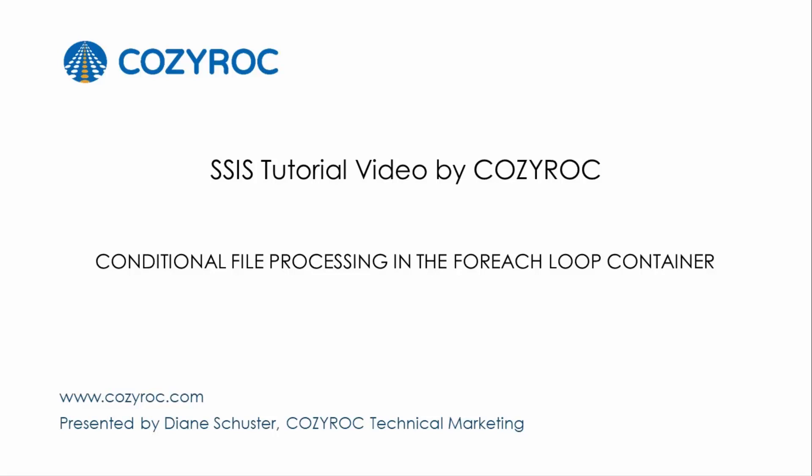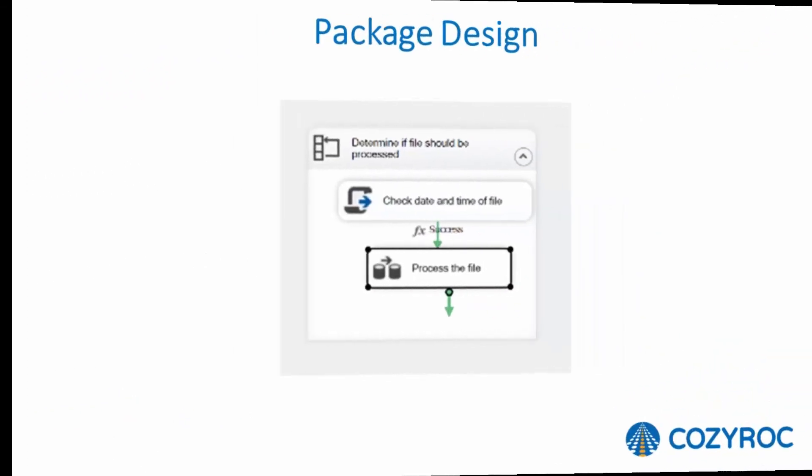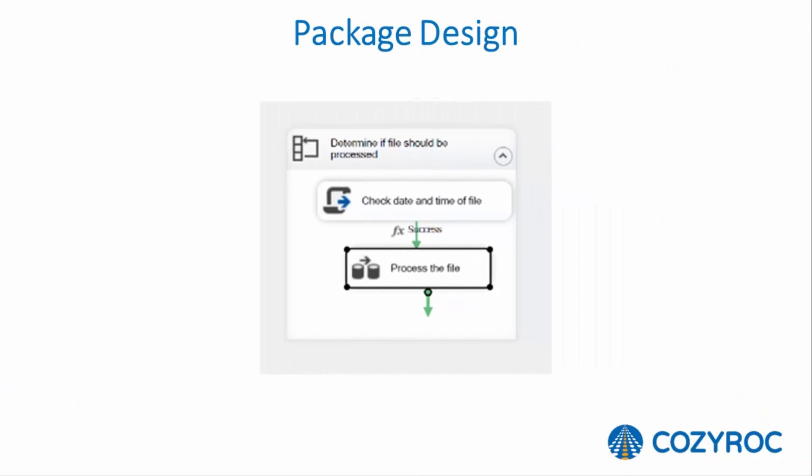In this video I'm going to demonstrate how to configure a package that conditionally processes files based on a date. I'll be using a for each loop, and inside that for each loop I'm going to use a script task to check the last modified date for each file in a source directory. If it's been modified since that date then I will process it; if not, I'll skip it. The processing will be to copy an Excel file from a source directory to a destination directory.